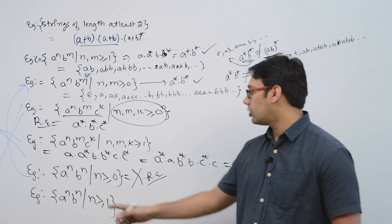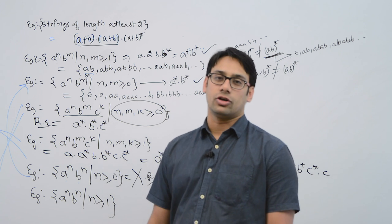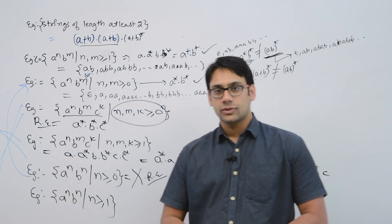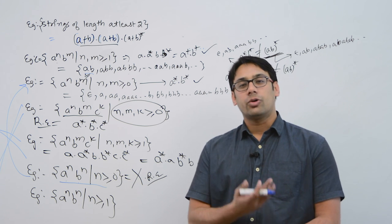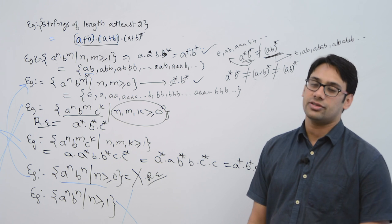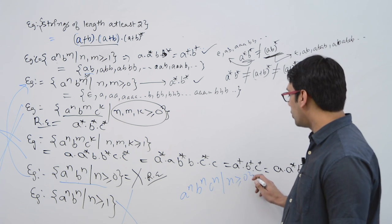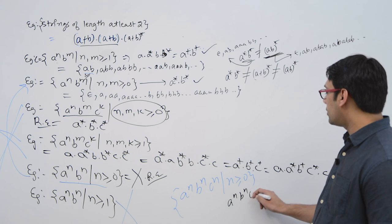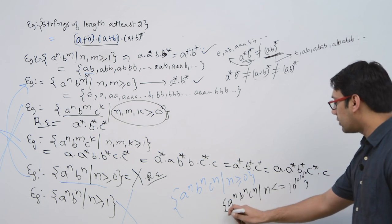For the language a^n b^n, we cannot draw a finite automaton. This language is not regular because it requires comparing the number of a's with the number of b's. If it is not regular, we cannot give a regular expression for it. Similarly, a^n b^n c^n is also not regular and cannot have a regular expression. However, if we bound n — for example, n ≤ 10^10^10^10 — then that language becomes regular and you can write a regular expression for it.